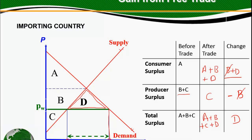This intuitively makes sense. As the price for the good falls, consumers would benefit from this lower price, and the producers would lose out because the value of the good that they sell has gone down — it's gone down from PE to PW. So the producers would lose. But given that consumers are gaining much more than the producers are losing, overall the country gains from trade, and this is equal to the triangle D.